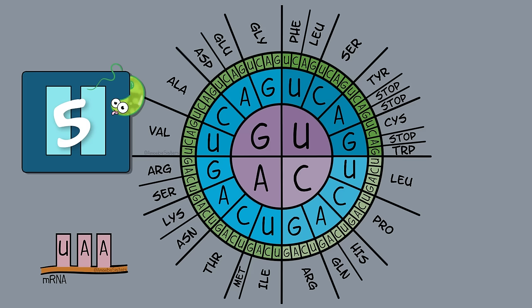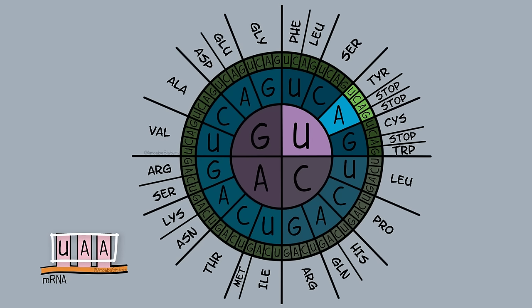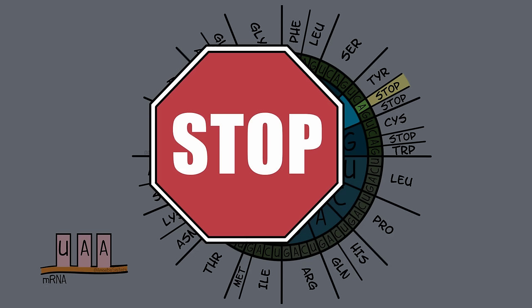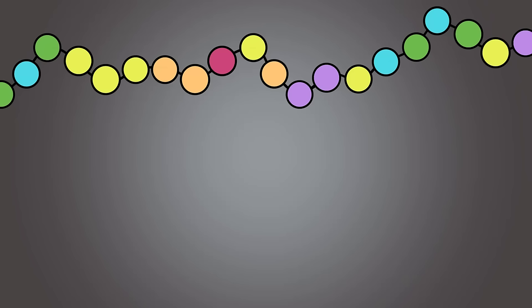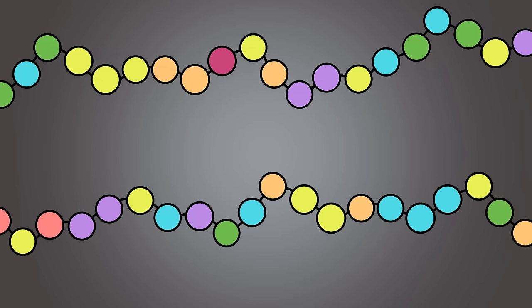What does the mRNA codon UAA code for? In slow motion here, you can see we get STOP. This does not code for an amino acid. Instead, it generally is at the end of a sequence for a polypeptide, and it signals the end of reading the codon chart for this chain of amino acids. In reality, polypeptides tend to have many more amino acids than this, and proteins tend to be made of one or more of these polypeptide chains.